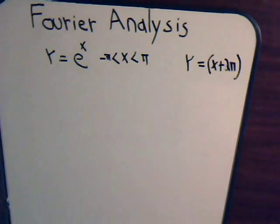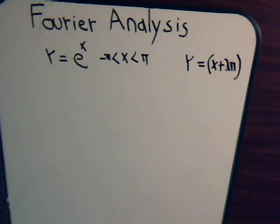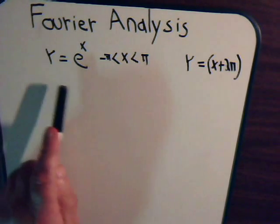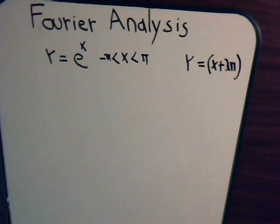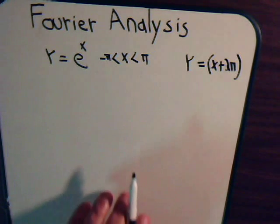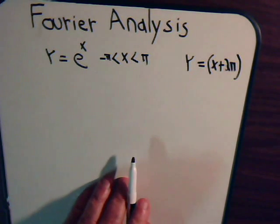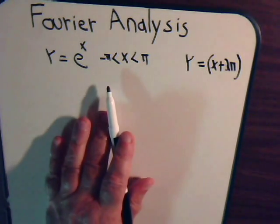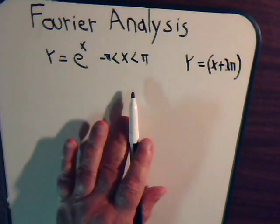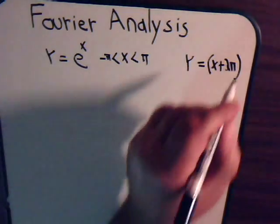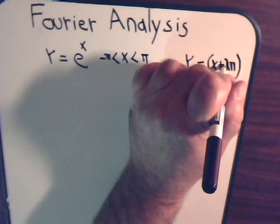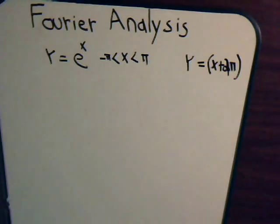In this video, we want to consider: if we have y equals e to the x, how can we expand that in a Fourier series? We're particularly interested in the range where x goes from minus pi to pi, and the function is periodic.